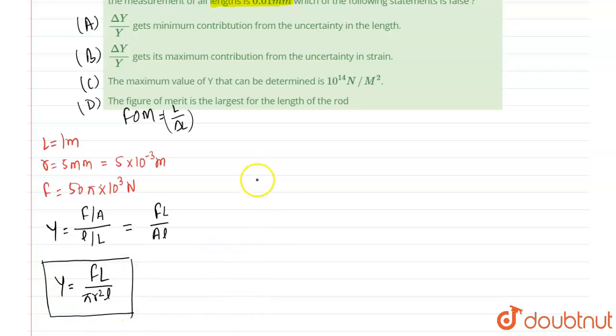Now for uncertainty, delta Y over Y will be equal to - the value of force is exactly known so we will not use it in uncertainty. We will write the formula: 2 times delta r over r plus delta L over L plus delta L over L. That is the relation for uncertainty.